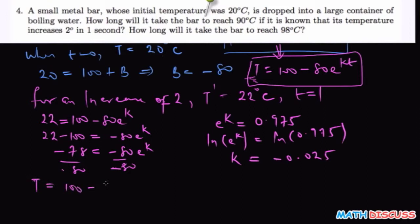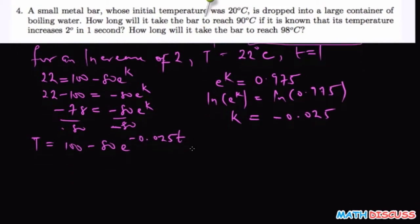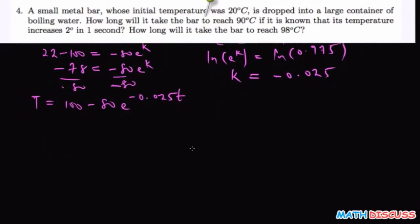100 minus 80 e to the power k. Our k now is negative 0.025 times t. So we want to find the one for 90.